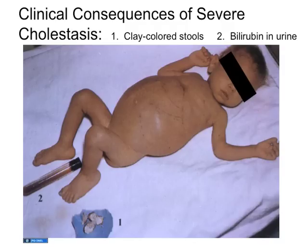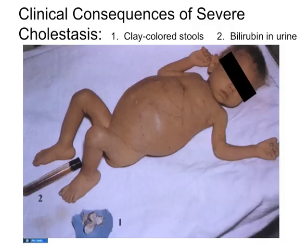This is a baby with biliary atresia — a disease presenting with essentially complete bile duct obstruction at birth where the extrahepatic bile ducts simply don't form. The baby is very jaundiced. The urine is a really dark brown from bilirubin. You can also check urine for blood versus bilirubin to distinguish causes. Here are the little white clay-colored stools — they don't have a brown color because the pigment is all in the blood, skin, and urine, and not in the bowel.